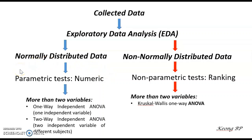The Mann-Whitney test is used to compare two variables and is equivalent to the independent t-test, while the Wilcoxon signed-rank test is equivalent to the dependent t-test. For parametric tests, if your experiment has more than two variables, the test to use will be ANOVA. There are two types of ANOVA: one-way independent ANOVA, which tests for one independent variable, and two-way independent ANOVA, which has two independent variables of different subjects. For this course, we will only discuss one-way independent ANOVA, which involves only one independent variable.